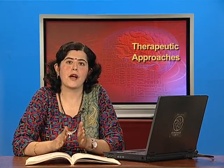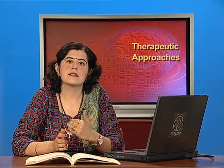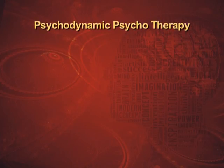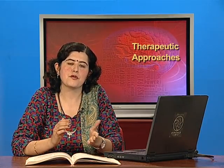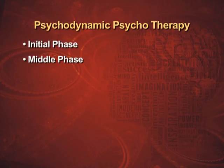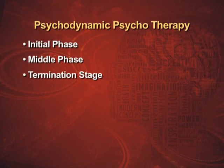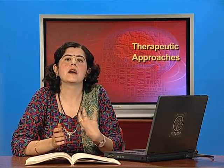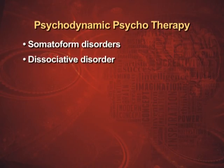The duration of psychodynamic psychotherapy is normally four to five days per week for a number of years. The stages are: first, the initial phase where the client becomes aware of procedures, rules, and routines, establishes rapport with the therapist, and begins recollecting unconscious material. Second, the middle phase — the actual treatment phase — involves transference, resistance, interpretation, and working through. Third, the termination stage, where the client has gained insight, has recovered, and is now better equipped to handle life issues positively. Psychodynamic psychotherapy is used most for somatoform disorders, dissociative disorders, and schizophrenia.